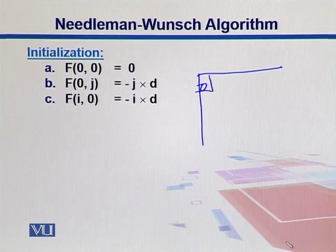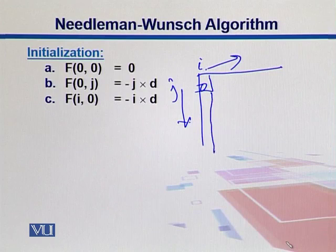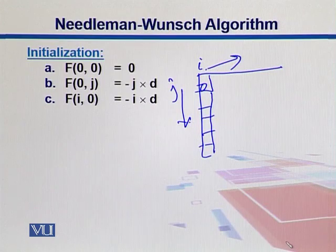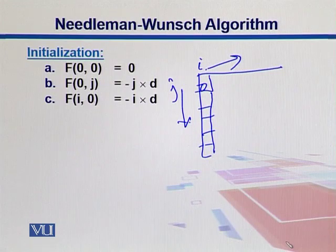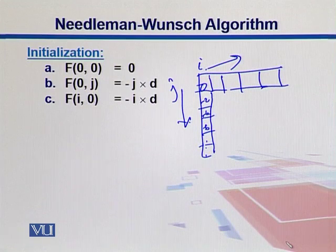For example, we have index I running over rows and J running over columns. We put zero initially and then move in one direction, keeping on adding gap penalties. If our gap penalty is minus two, we move down — J advances while I stays at the same place — so we add minus two, then minus four, and so on. Similarly, we can move left to right along the rows and add those gaps. That is what we do during initialization.